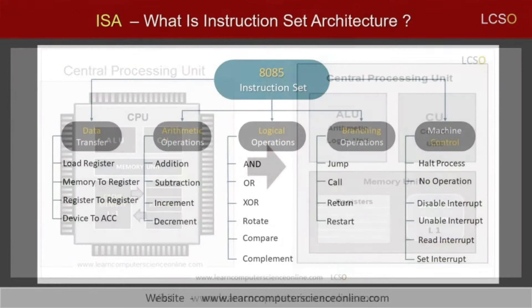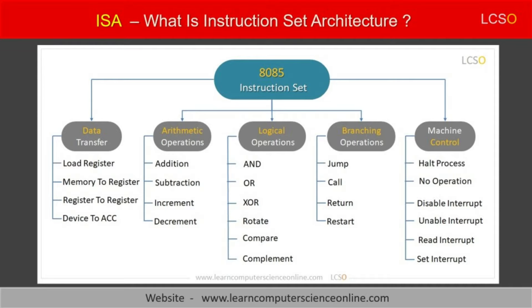For example, the Intel 8085 instruction set architecture consists of a total of 246 operation codes and 74 instructions.